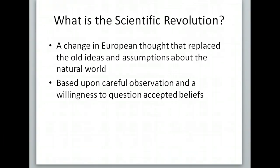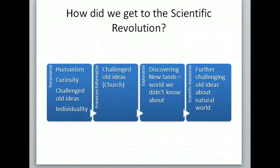So how did we get to the scientific revolution? Well, in the Renaissance we had humanism — a growth of curiosity and the development of humanism. We started to challenge some old ideas and we started to see a lot of individuality forming.